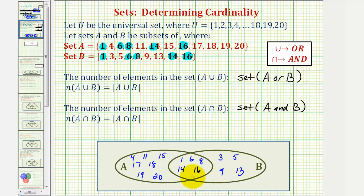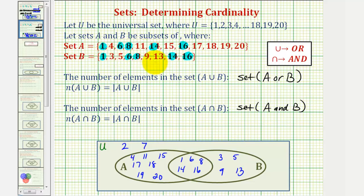We do have all the information we need to answer these two questions, but let's complete our Venn diagram by determining the elements that are in the universal set but not in A or B. Counting from one to twenty, notice two, seven, ten, and twelve are not in A or B but are in the universal set, so those would be placed outside the circles. I think thirteen through twenty are listed in A or B.